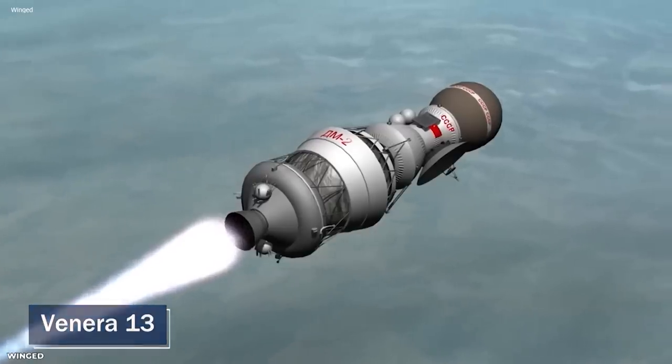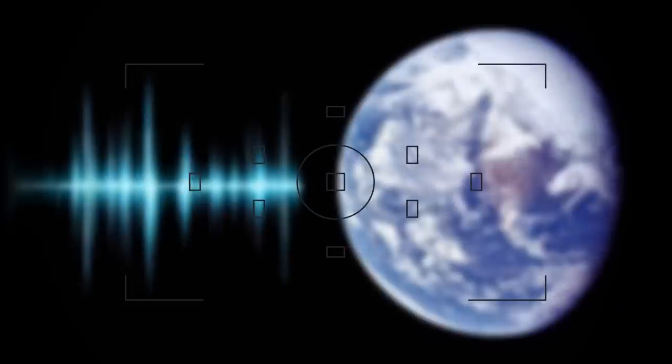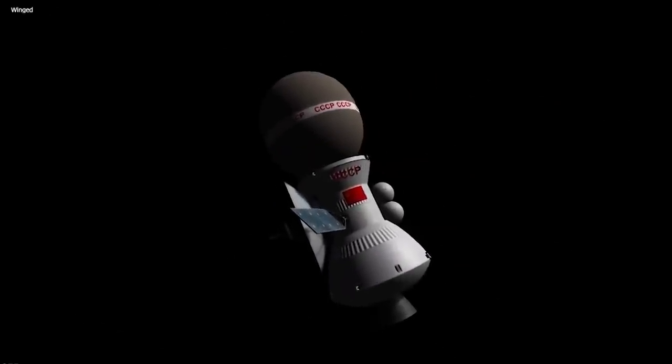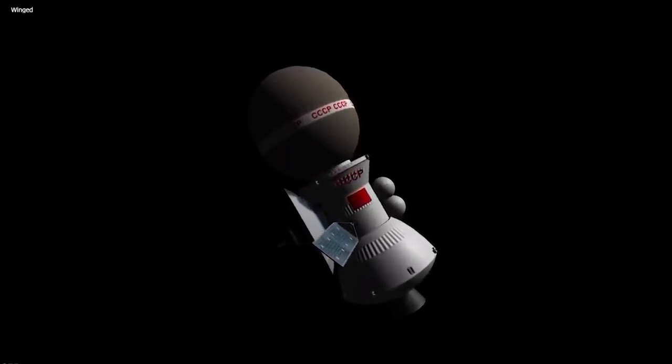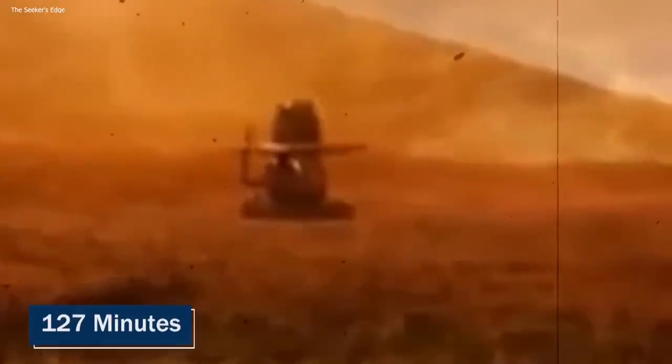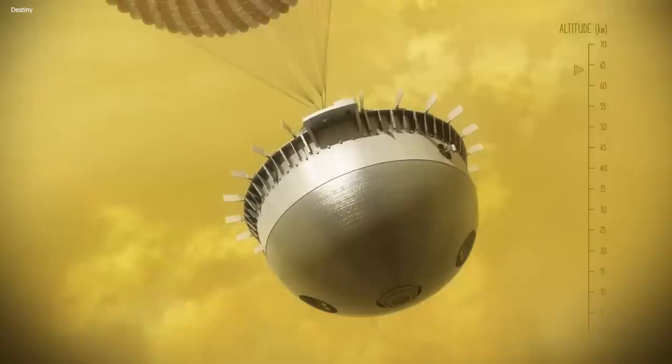The Venera 13 probe captured the sounds of the Venusian wind, making history as the first recording of any sound on a planet other than Earth. But that's not all the Venera 13 was able to accomplish. The lander, designed to operate for only 45 minutes on the surface, ended up exceeding expectations and lasted a whopping 127 minutes. During that time, it captured and sent back stunning color photos of the planet's surface, revealing a harsh and barren landscape, unlike anything we've seen before.